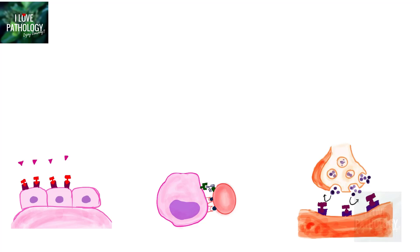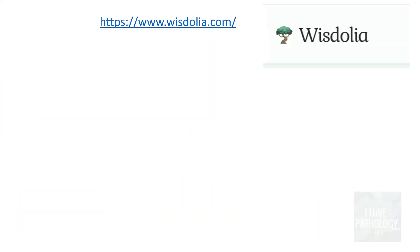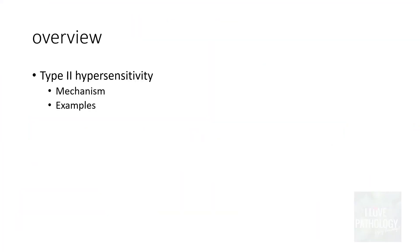So this is part 5 of diseases of immune system, and we will be discussing about type 2 hypersensitivity reaction. In my previous video you have learnt in detail about type 1 hypersensitivity reaction. In this section we will understand the mechanism of type 2 hypersensitivity reaction along with some examples.